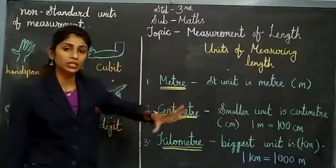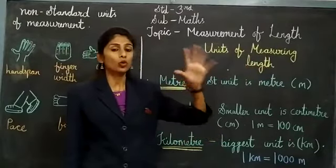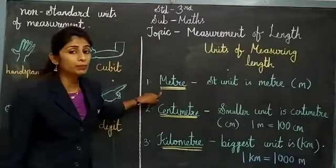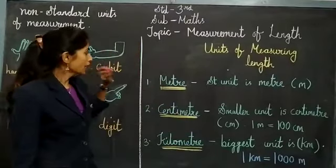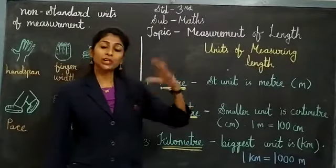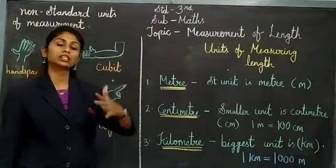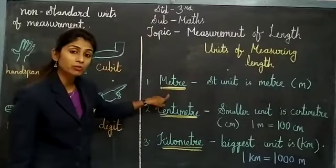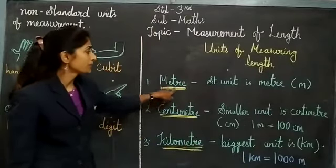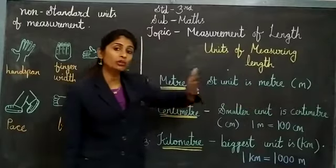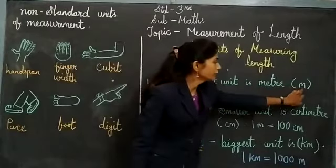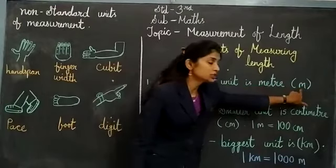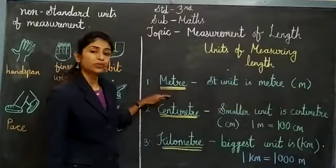Whenever I am talking about length, length means how long any object is. The first unit is meter. Wherever I am measuring some big thing — if the object is big or long — I will measure it in meter. The standard unit is meter and we denote it as small 'm'. For example, if I want to measure door length or wall length, since they are bigger in length, I will use the meter unit.